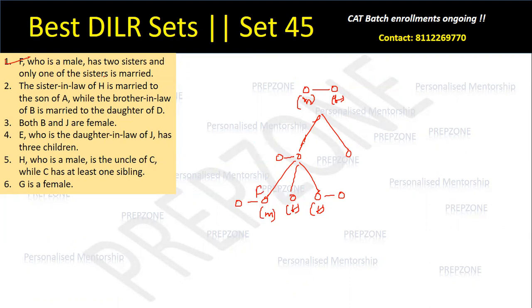The second clue: the sister-in-law of H is married to the son of A. The sister-in-law is the wife of H's brother — so H has a brother, and his wife is the sister-in-law of H. This means the person the sister-in-law is married to is the brother of H, and because they are brothers they will have the same father. So A will be their father. Now H is also given as male, so two males at a similar level — this is only possible at the second generation level, and this guy is married, so H is the one who is not married.